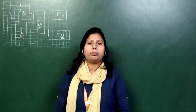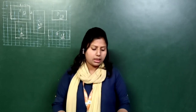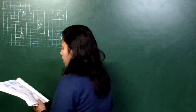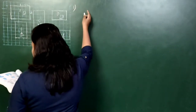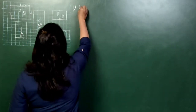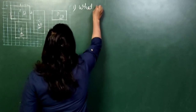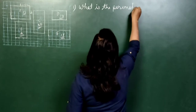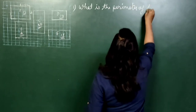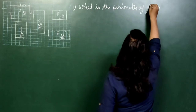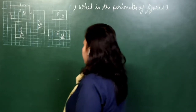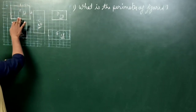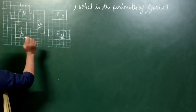Answer the following questions on the basis of different figures given below in the graph paper. Question number 1 is given: What is the perimeter of figure A? To find it, just count the squares along the boundary and we will get the perimeter of figure A.